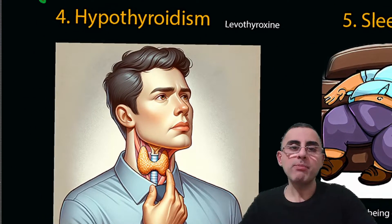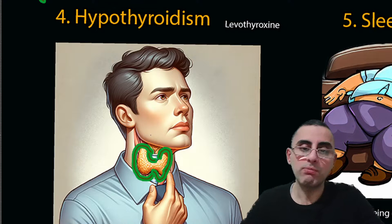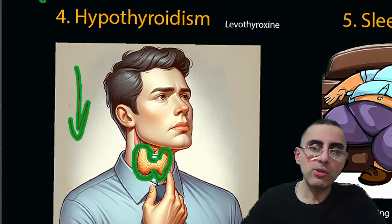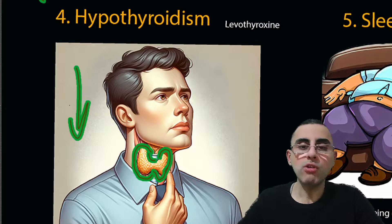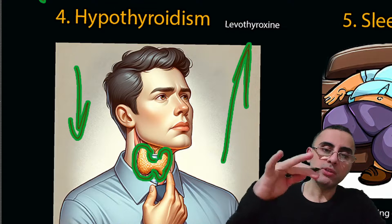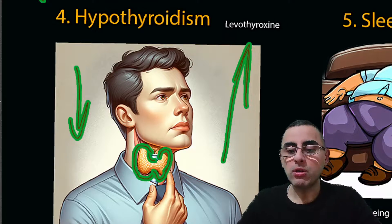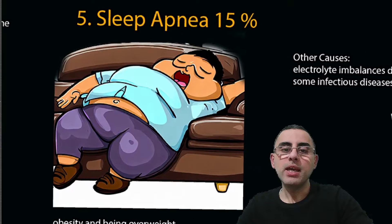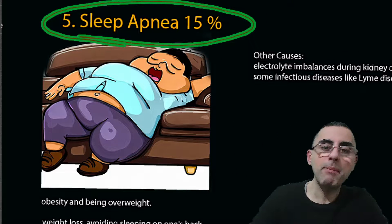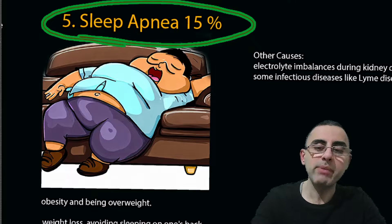Another common cause is hypothyroidism, when the thyroid gland does not produce enough thyroxine. Low thyroid hormone leads to slow metabolism, which causes bradycardia. The solution is levothyroxine, a synthesized hormone replacement that increases body metabolism and heart rate. In around 15 percent of cases, sleep apnea can also cause bradycardia, especially nighttime bradycardia — and obesity or being overweight is a common cause of sleep apnea.